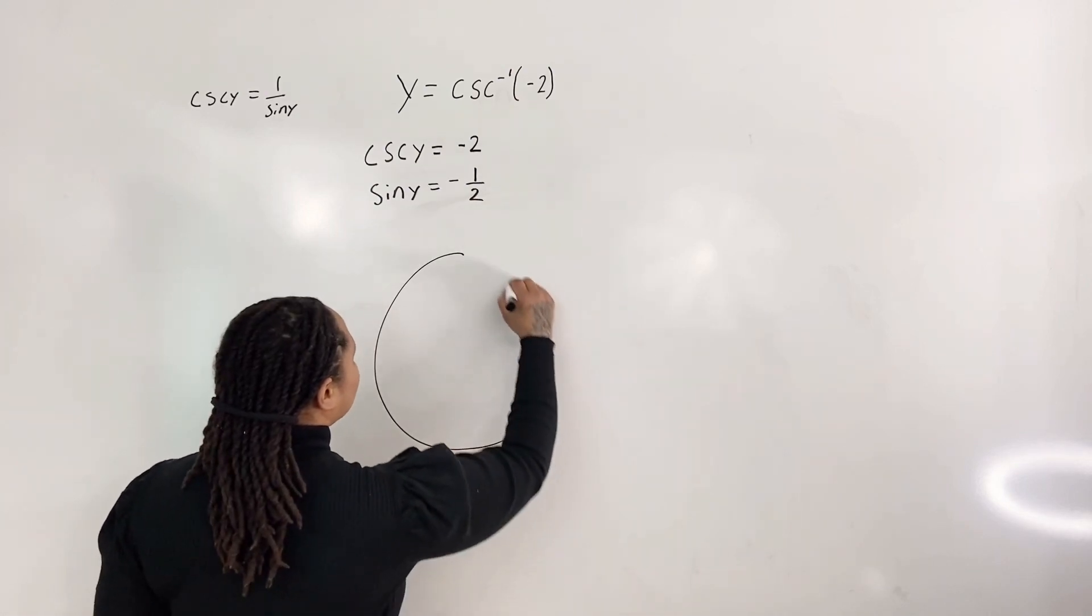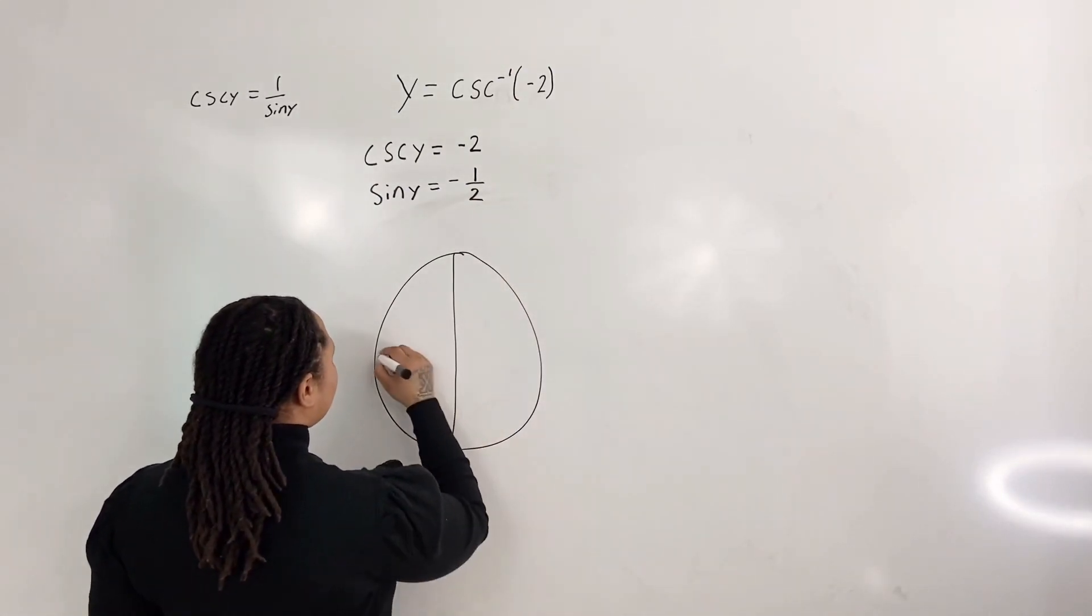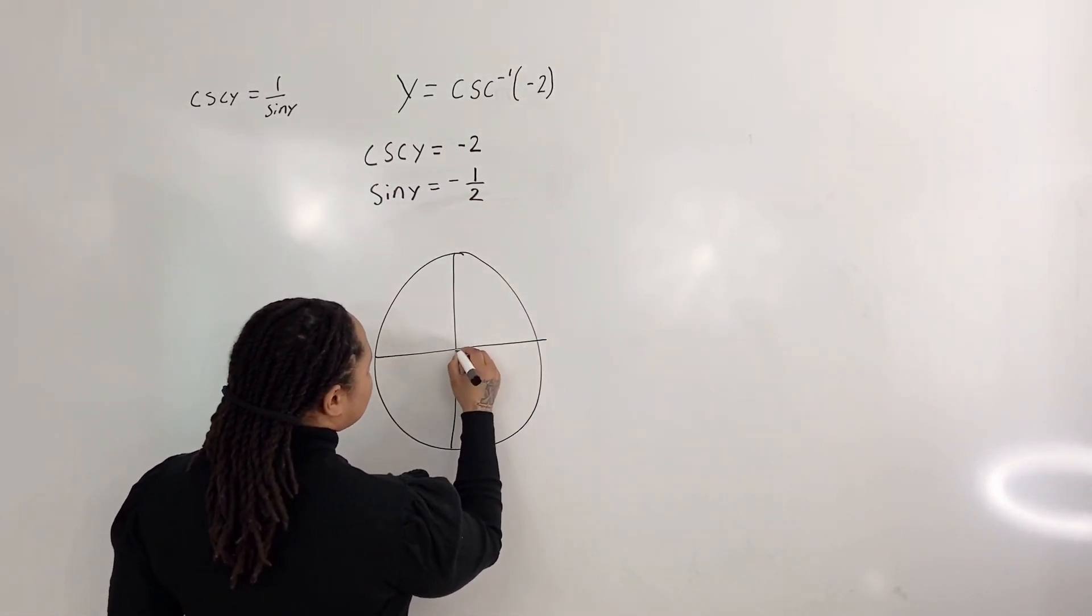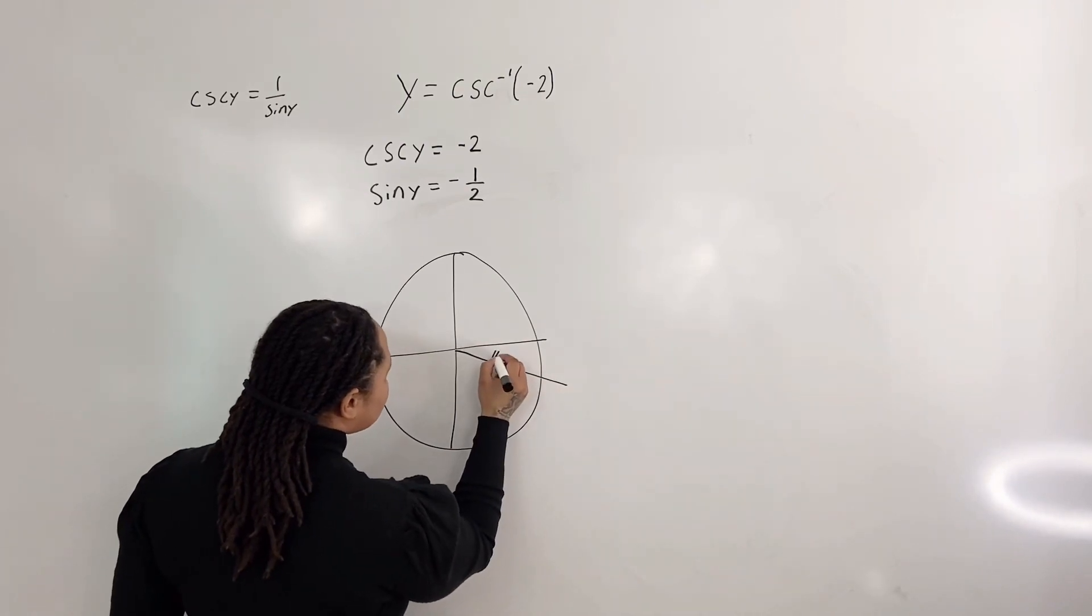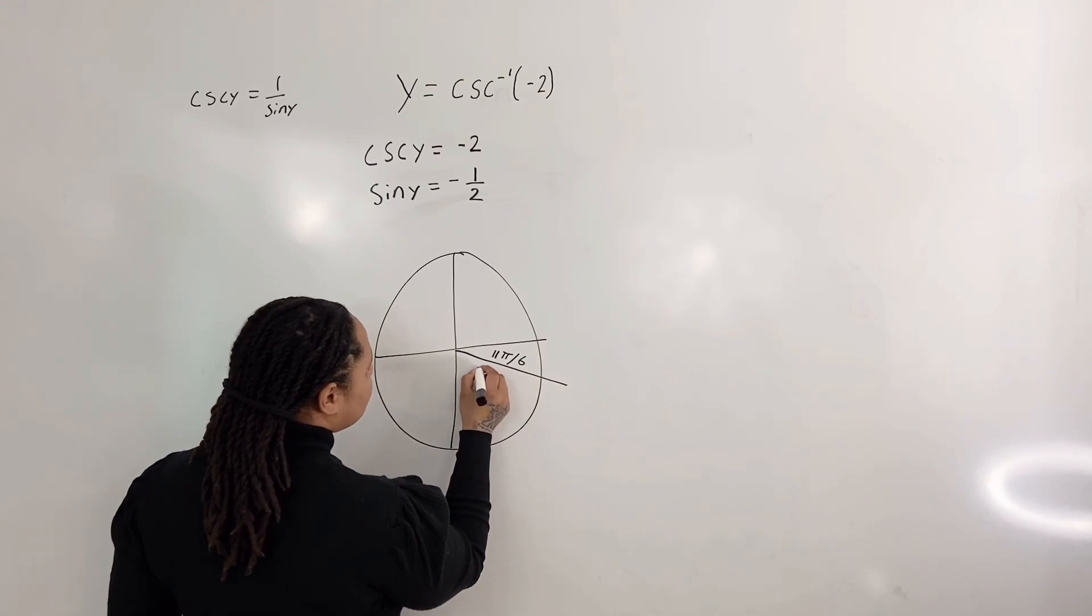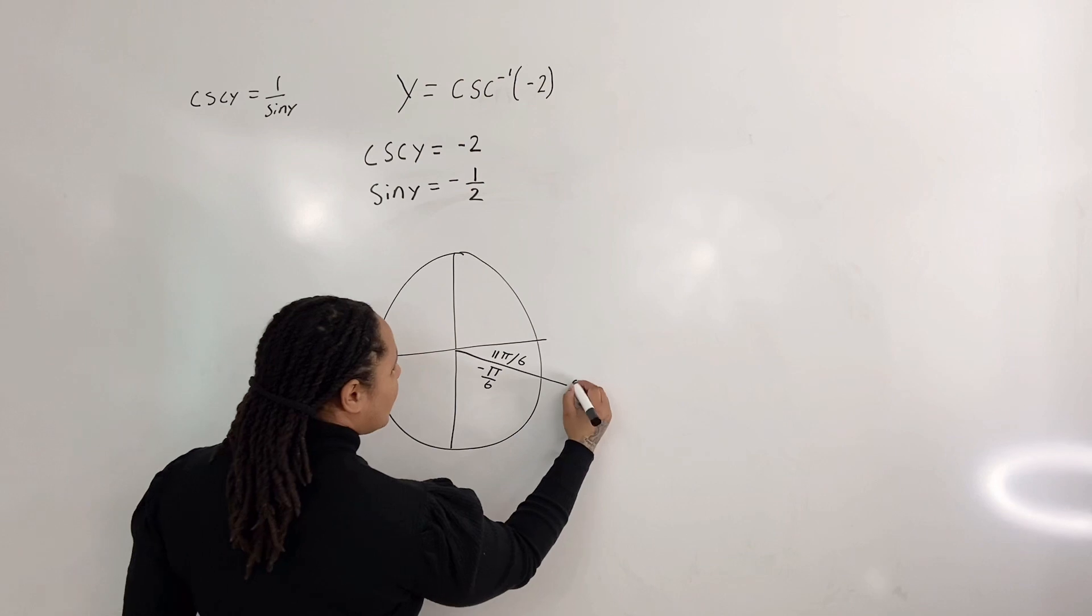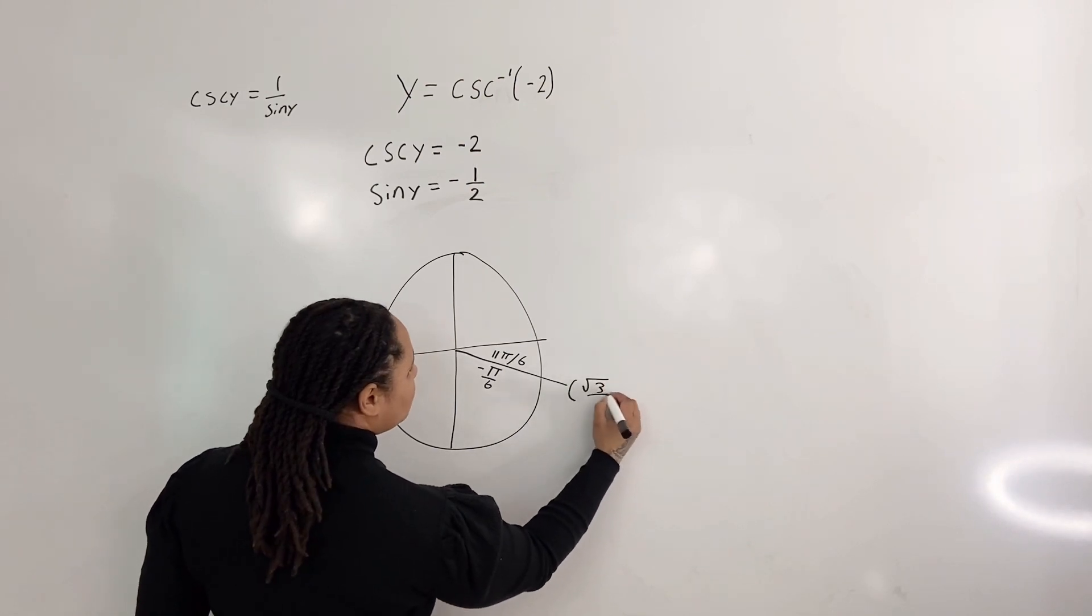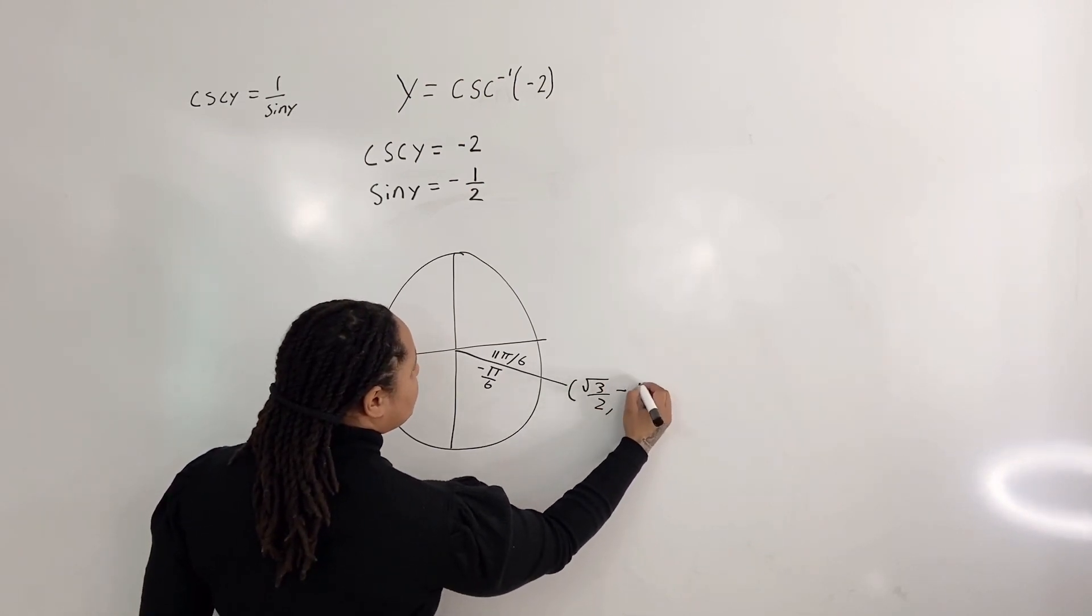we know that at 11 pi over 6, and we also know that this location is also negative pi over 6, we have coordinates root 3 over 2, negative 1 half.